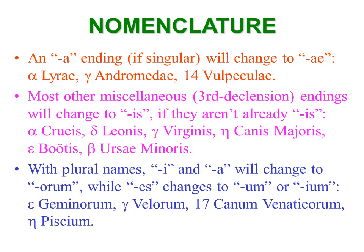If the constellation name ends in -a (singular), it changes to -ae, pronounced either 'eye' or 'ee' — the Romans would have said 'eye.' Examples: Alpha Lyrae in the constellation of Lyra; Gamma Andromedae, the third brightest star in Andromeda; or 14 Vulpeculae — Vulpecula, the little fox.